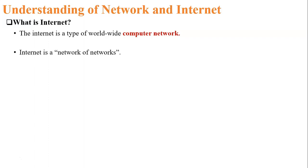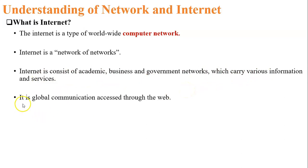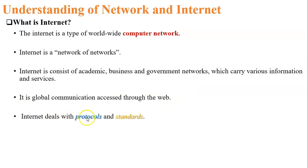Internet is a network of networks. There are a number of networks — academic, business, and government networks — connected with each other, which carry various information and services. Internet is a global communication access through the web, and it deals with protocols and standards.